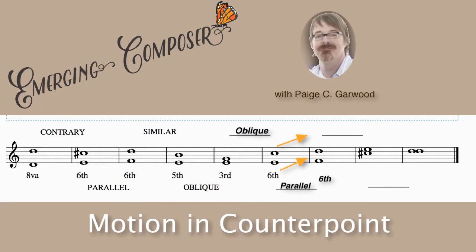Now let's look at the next measure. We have a C sharp and an E. C, D, E — that's a third. So we have a sixth on the previous measure going to a third. Both notes are moving in the same direction but ending up on a different interval distance than where they started — from a sixth to a third, both voices moving in the same direction. That is similar motion.